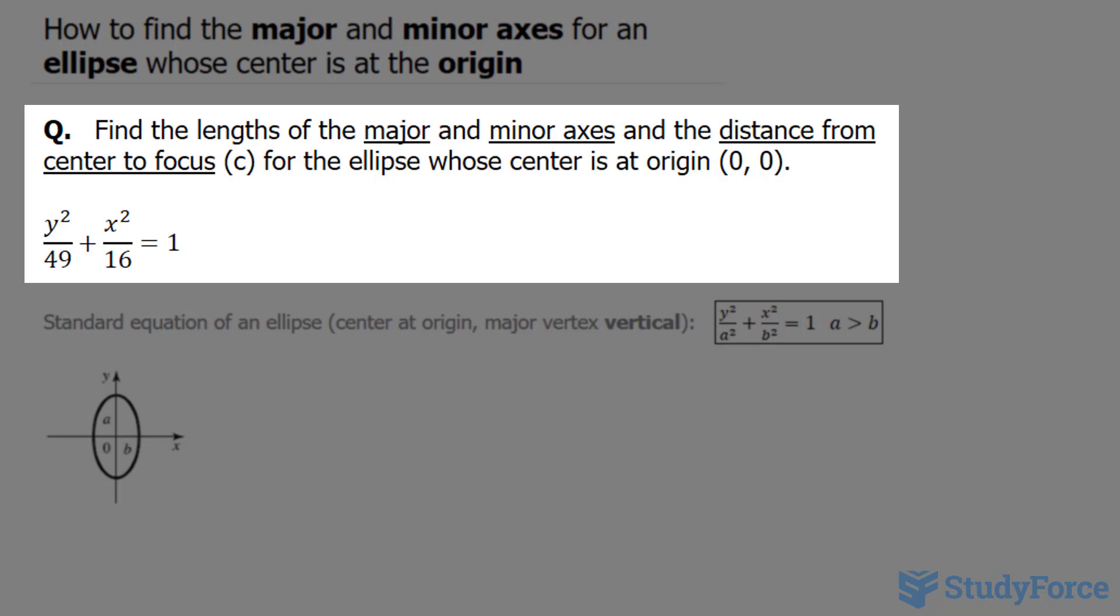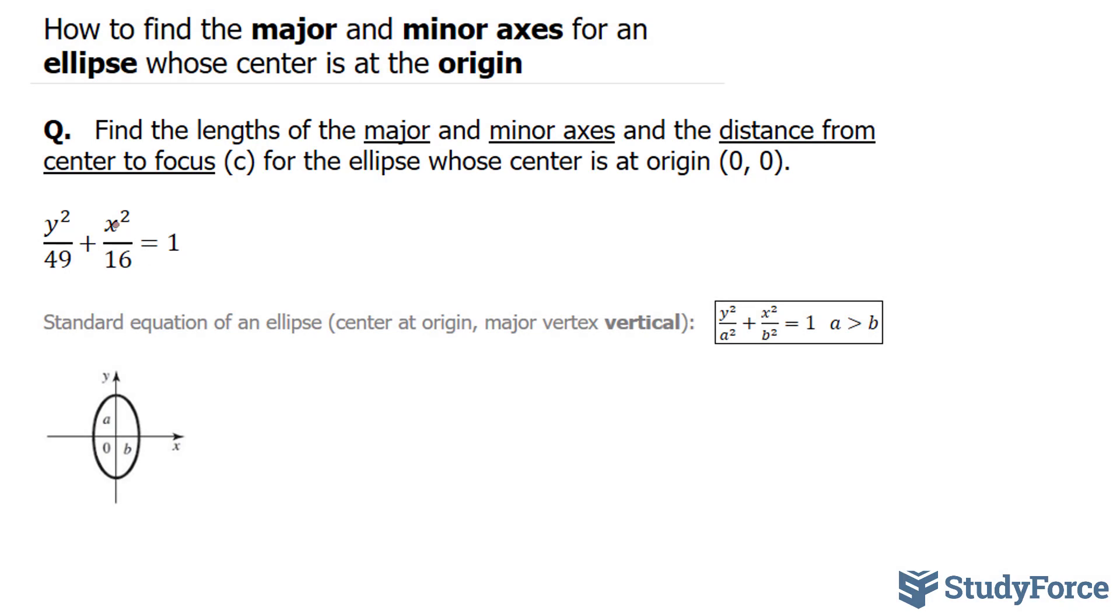The equation that we're working with is shown below, and you'll notice that the larger of these two denominators, 49 and 16, the larger of the two is underneath the y. Because of that, we know that this ellipse will be vertically longer than it is horizontally.